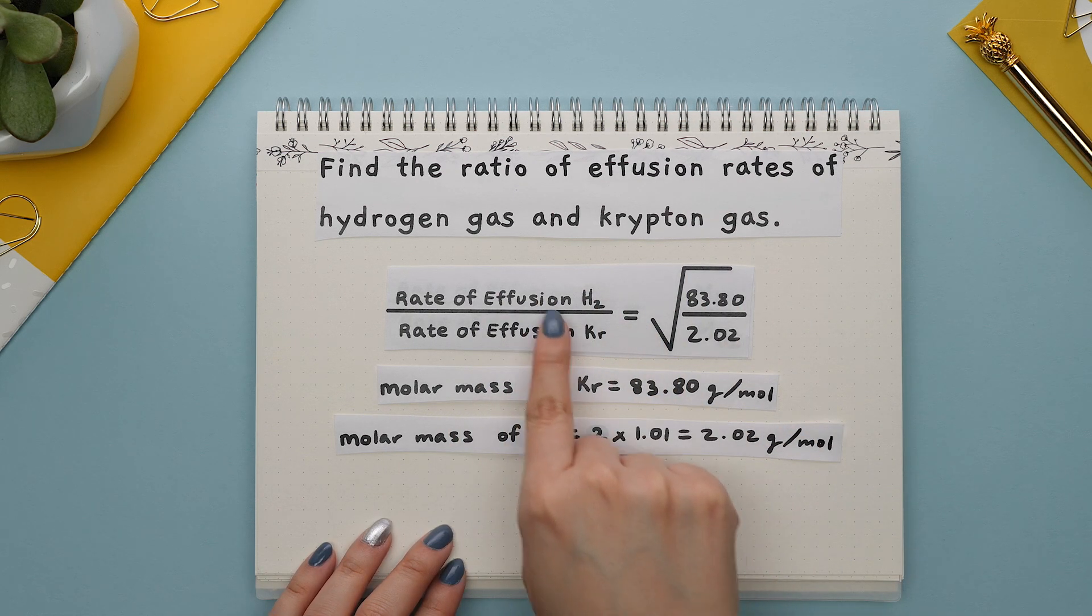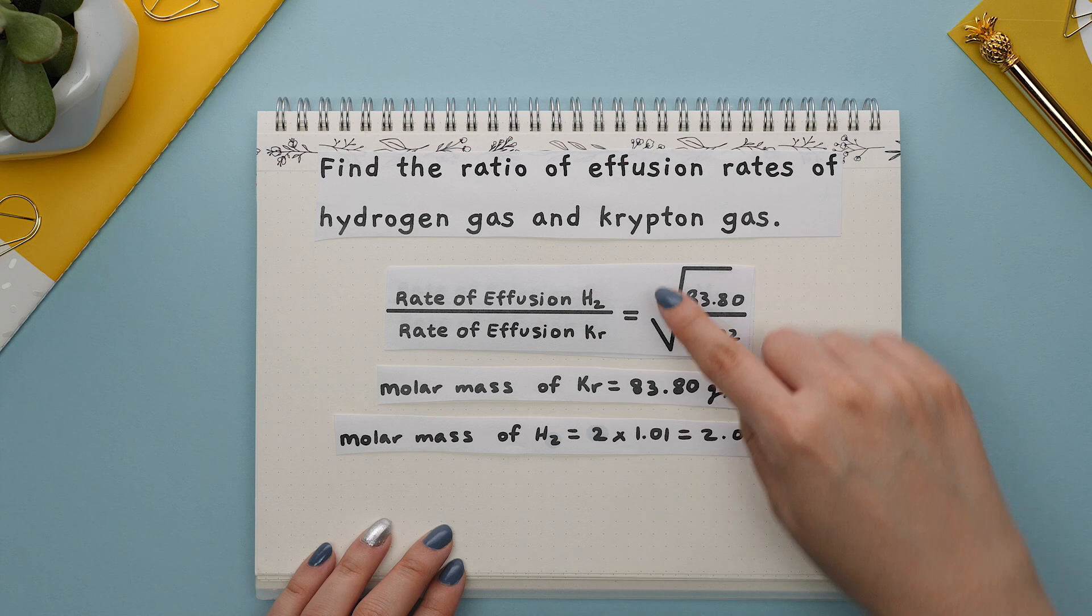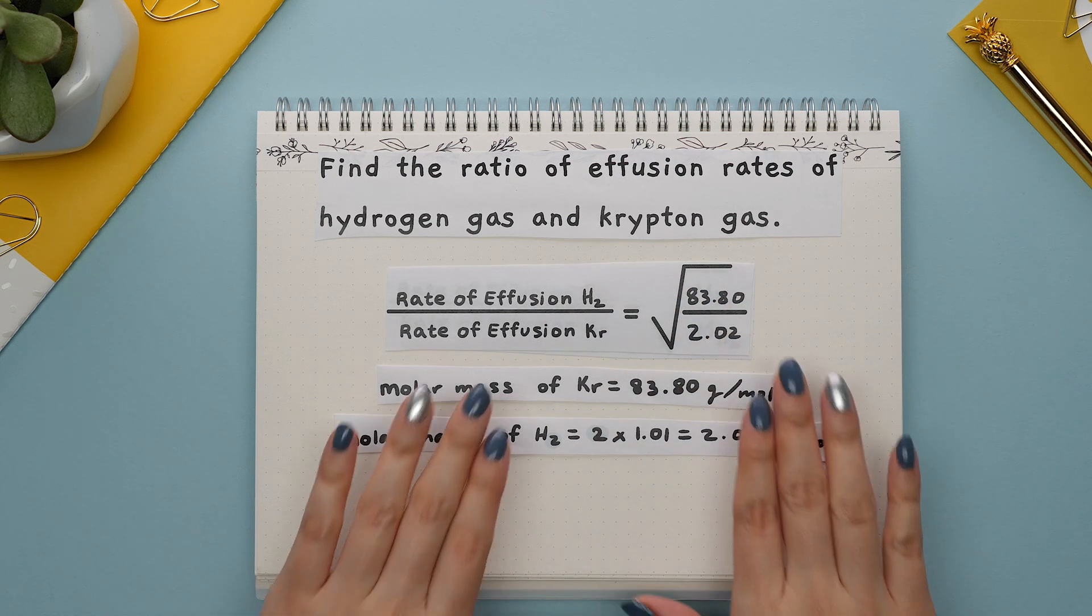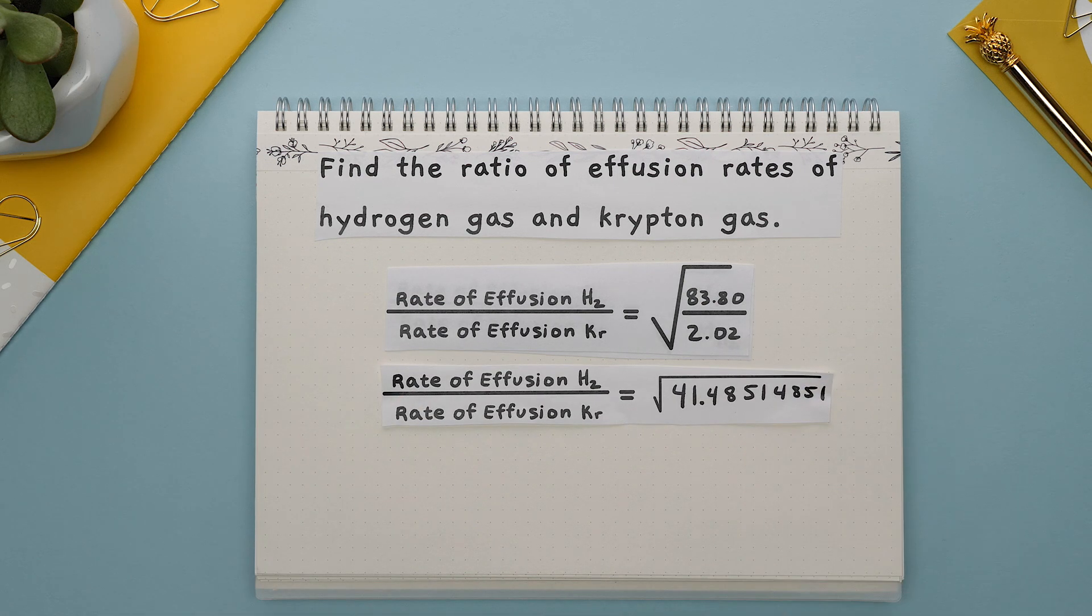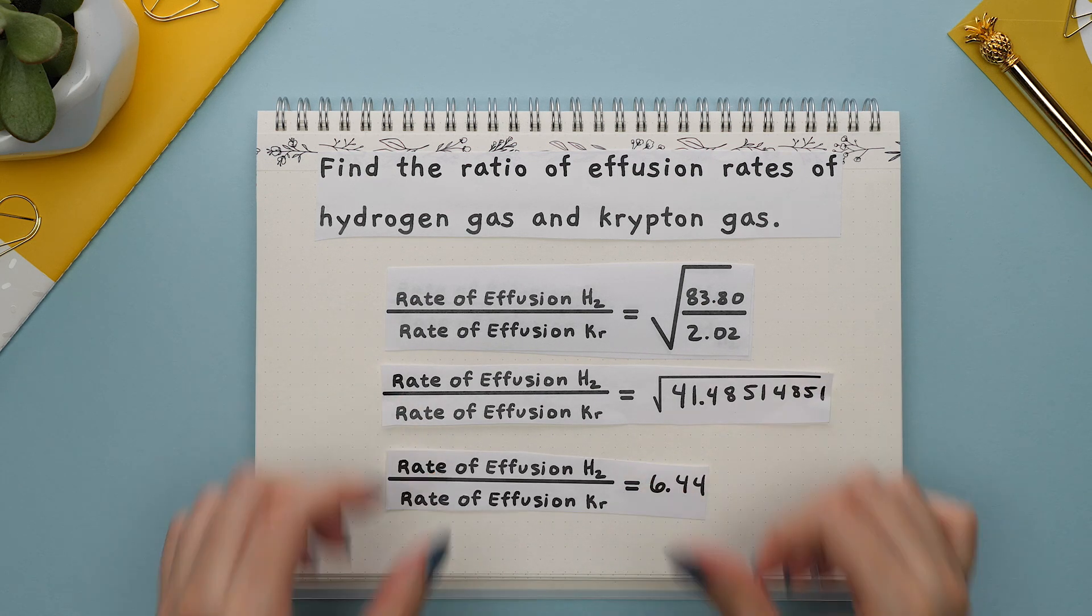This fraction is actually our ratio since it compares the rate of effusion of each gas. Our next step is to divide these two numbers then take the square root and our answer is 6.44.